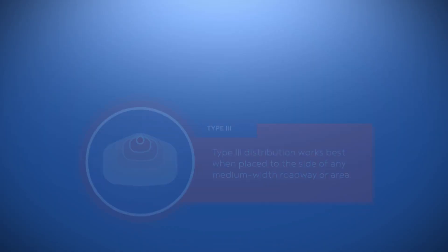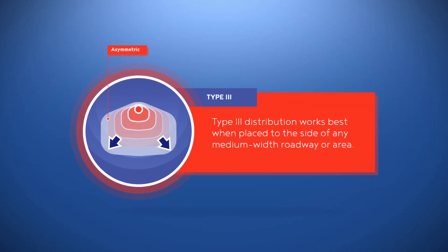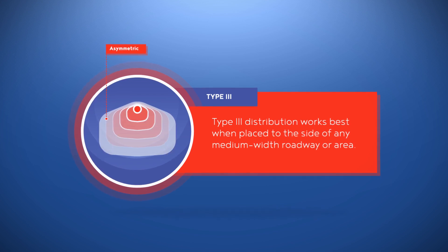Let's say you're looking for an area light. You'll want to find the right distribution type for your space. The distribution of the light refers to the shape of the light that it creates. We focus on three types. Type 3: with an asymmetric light pattern, Type 3 distribution works best when placed to the side of any medium width roadway or area.